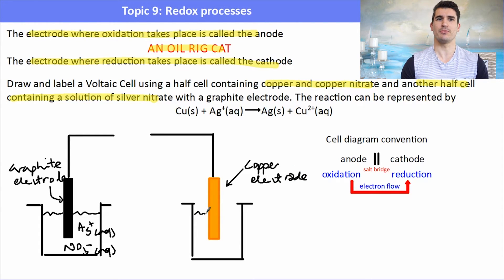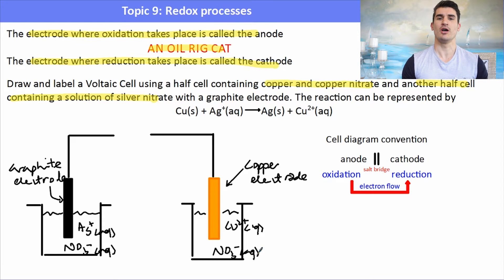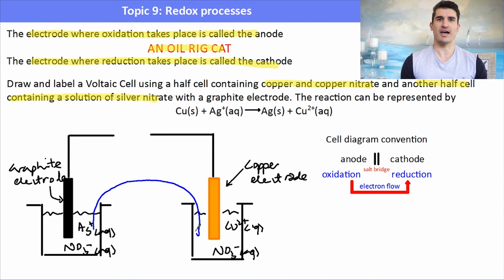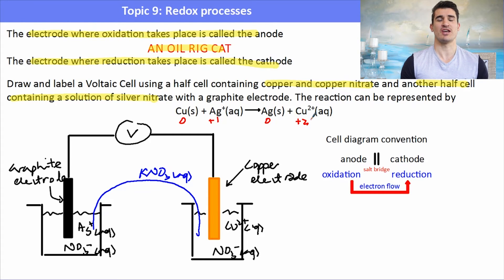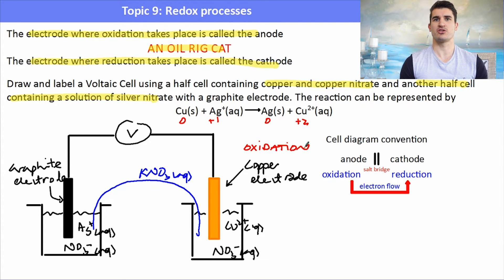When labeling, make sure you include arrows and lines showing where the solution fills to. Don't just write Cu²⁺ — include the anion as well, because in the lab you need a soluble salt with both a cation and anion. Connect the half cells with a salt bridge; KNO₃ is best because it won't react with anything else in the half cells. Use a voltmeter connected by electrical wires. Using oxidation numbers, copper goes from 0 to 2+, so it has been oxidized.